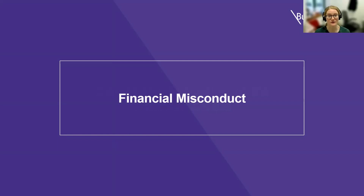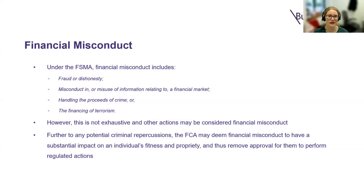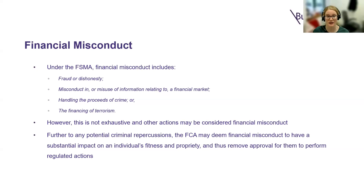Moving on to financial misconduct. Under Section 1H of the Financial Services and Markets Act 2000, which we refer to as FSMA, financial crime is defined as fraud or dishonesty, misconduct in or misuse of information relating to a financial market, handling the proceeds of crime, and the financing of terrorism. Whilst this definition isn't specifically one of financial misconduct, it's likely that the FCA would consider anything analogous to these points, but which possibly doesn't amount to a crime per se, as being sufficiently harmful as to fall under misconduct.